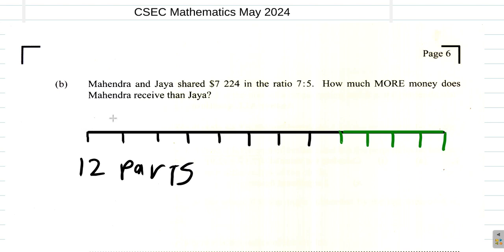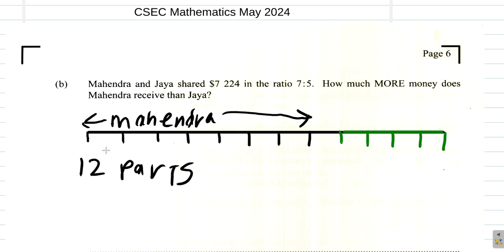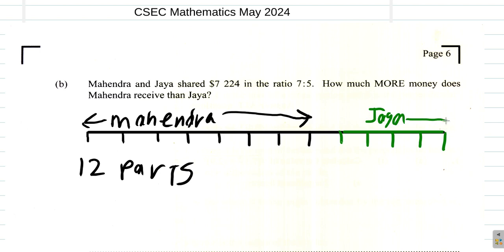The 7-part section belongs to Mahendra, and the 5-part section belongs to Jaya. So Mahendra gets 7 parts and Jaya gets 5 parts of the total.